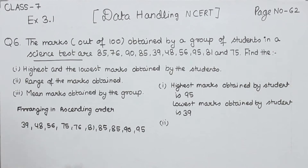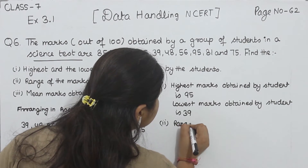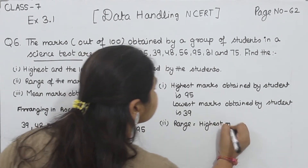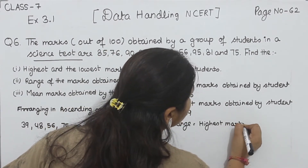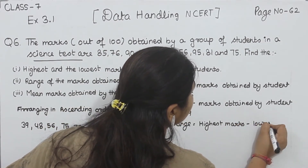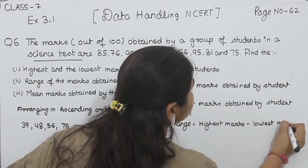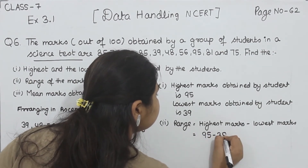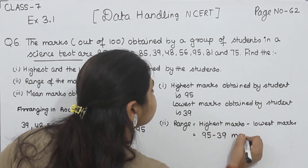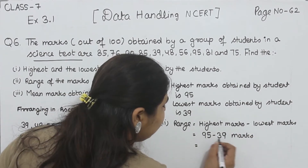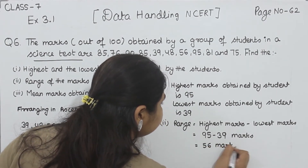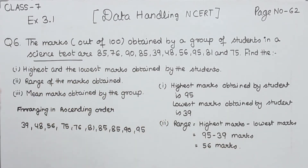Now the second part is range of the marks obtained. So we have to find out the range. Range is equal to highest marks minus lowest marks. The highest mark is 95 and the lowest mark is 39. So 95 minus 39 is equal to 56 marks. This is part 2.